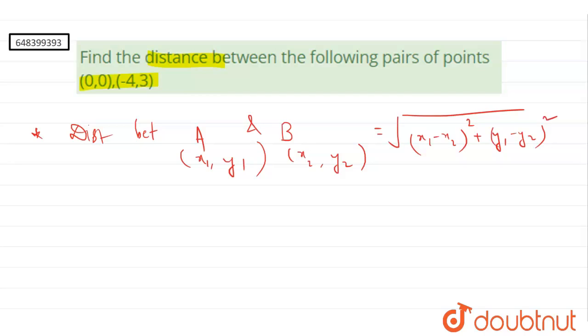that will be under root of x1 minus x2 whole square plus y1 minus y2 whole square. And we will use this formula to calculate the distance.